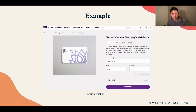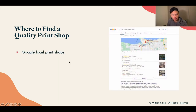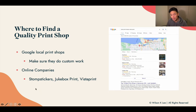Here's an example of what it looks like if you were to print with Stomp Stickers. Where do we find quality print shops? Google local print shops — that's honestly the best way. After you find them, make sure they do custom work and check their reviews. Online companies that serve pretty much the whole US and even Canada include VistaPrint, Jukebox Print, and Stomp Stickers. I've used them many times and they are fabulous to work with.